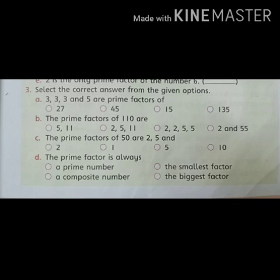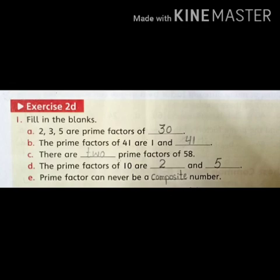Now students, first of all let's understand question 1. Question 1 is fill in the blanks. Part A: 2, 3, 5 are prime factors of dash.